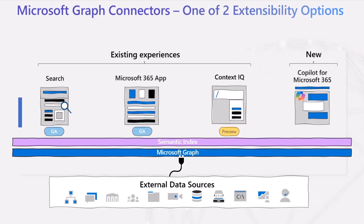In terms of the recap, Microsoft Graph Connectors is just one of the two extensibility options available when doing Microsoft 365 Copilot extensibility. That said, Microsoft Graph Connectors is not new at all - it's been there for a long, long time, because it is basically tied and coupled to the enterprise search experience.